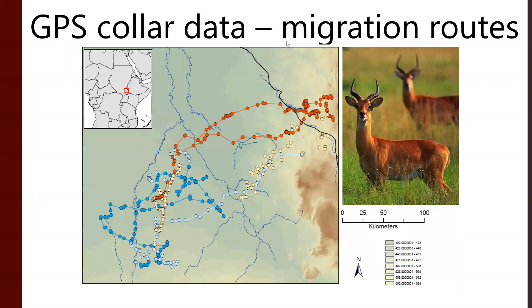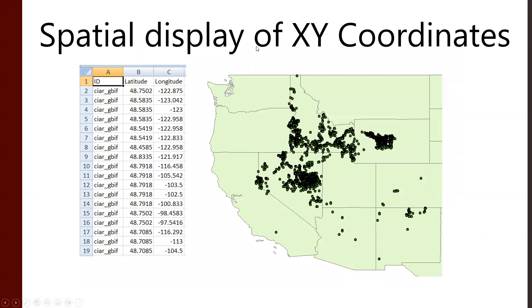We can also collect data just from GPS information and point values. For example, here are some migration routes from a pre-South Sudan study in Sudan and Ethiopia, or some gazelle migration routes. Point maps allow us to understand the distribution of things and where things are.